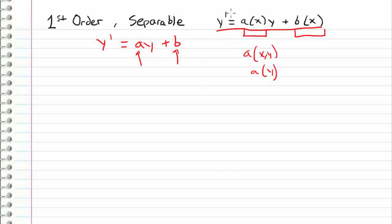So because we're dealing with unknown functions of x as our coefficients, we can't derive a general solution form to this type of differential equation like we did in the previous form with constant coefficients. And that's just because we don't know what these functions are.